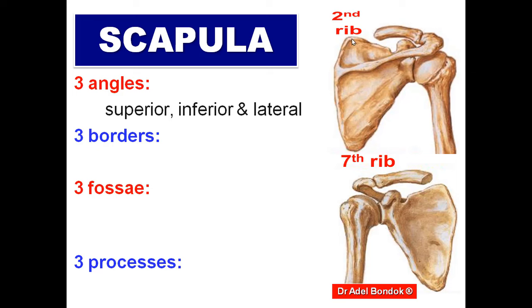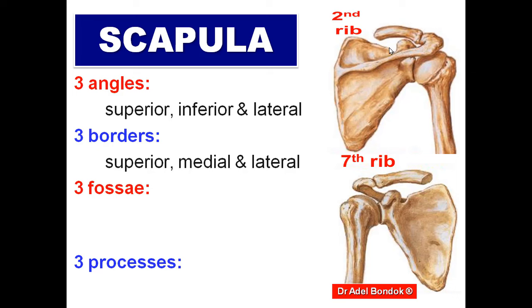The three borders are: the upper border, which is the shortest and has a notch called the suprascapular notch, transformed into a foramen by the suprascapular ligament; the medial border, which is vertical and called the vertebral border; and the lateral border, called the axillary border.